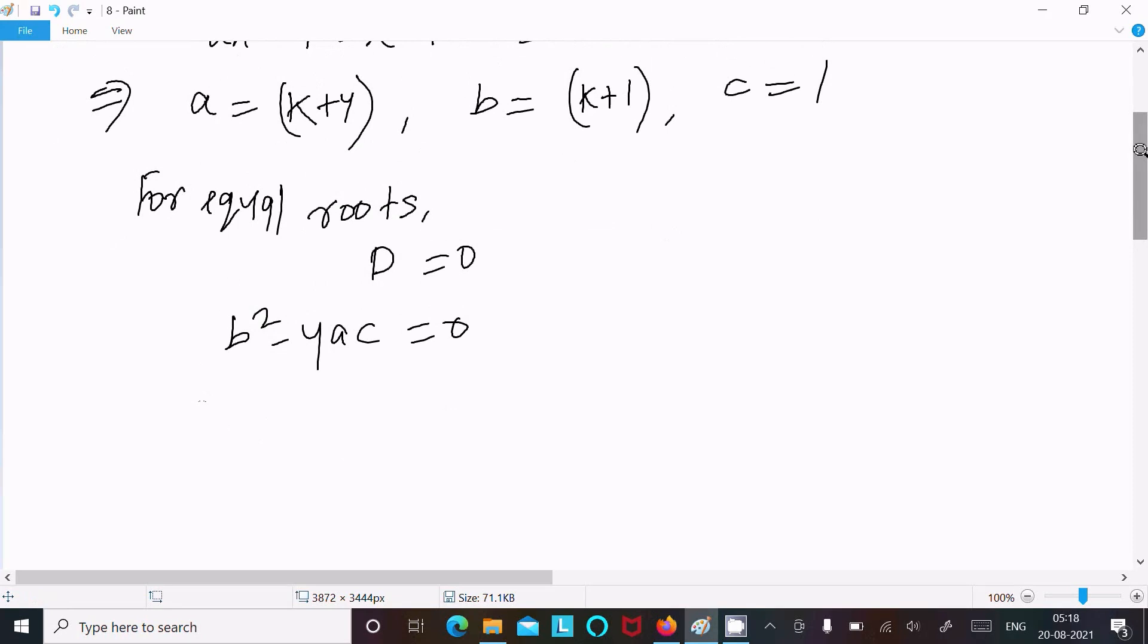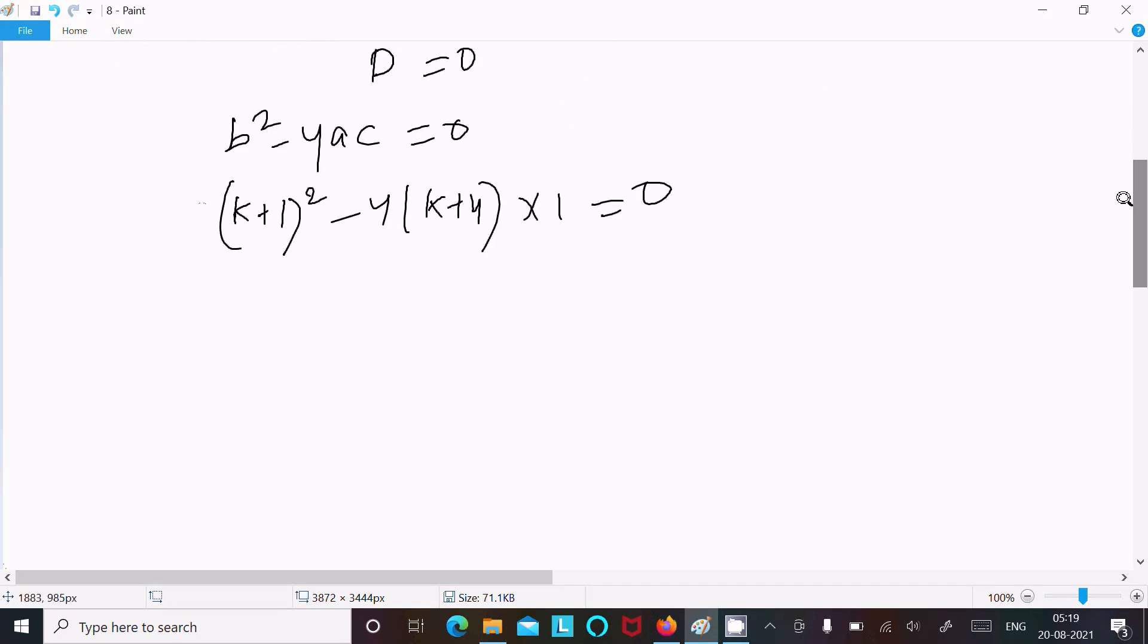So here, b² is (k+1)² minus 4 times a, which is (k+4), times c, which is 1, equals 0.